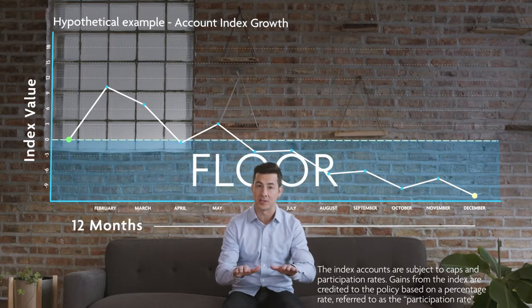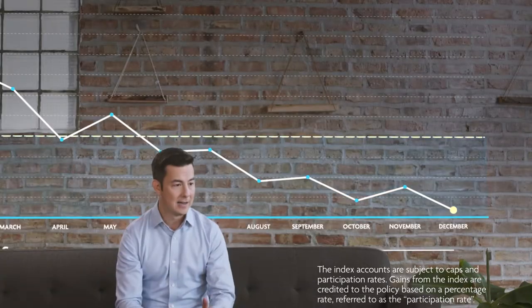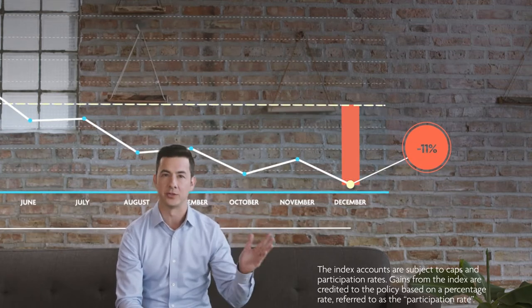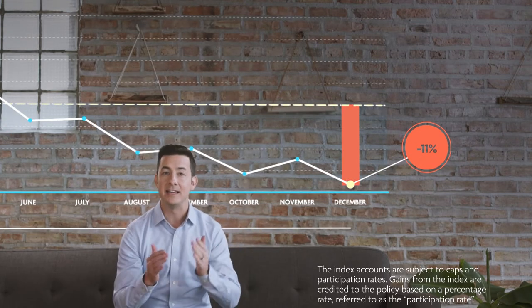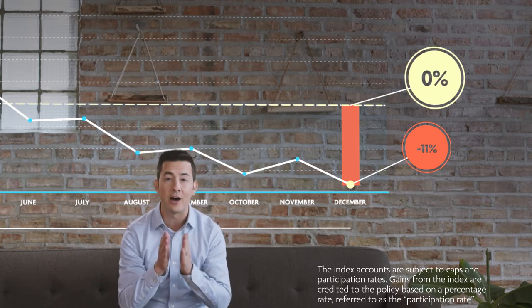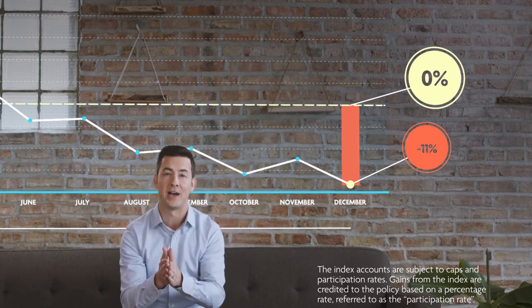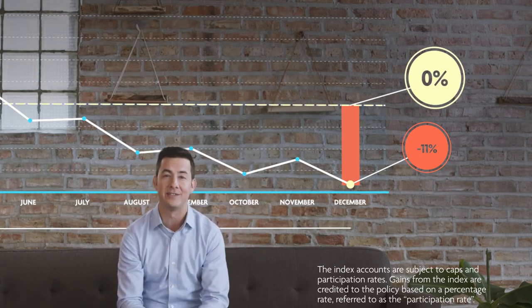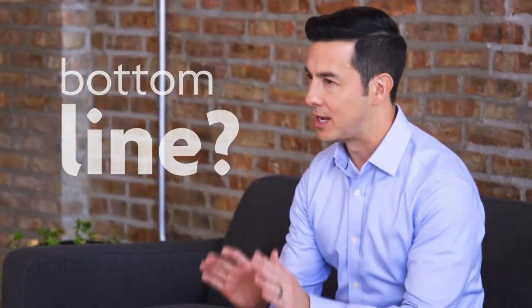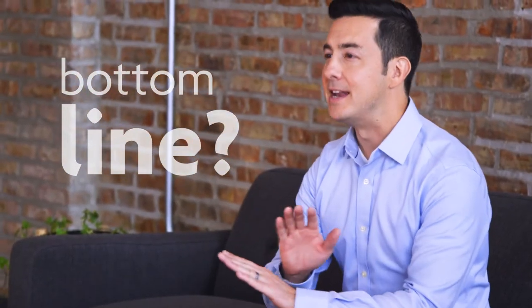On the flip side, if your account has negative growth, the floor protects you from losses. Let's say the index is down 11% over a year's time — the index account has a 0% floor, meaning that the account won't lose value due to negative index performance. So what's the bottom line? Negative index performance won't hinder your earning potential.